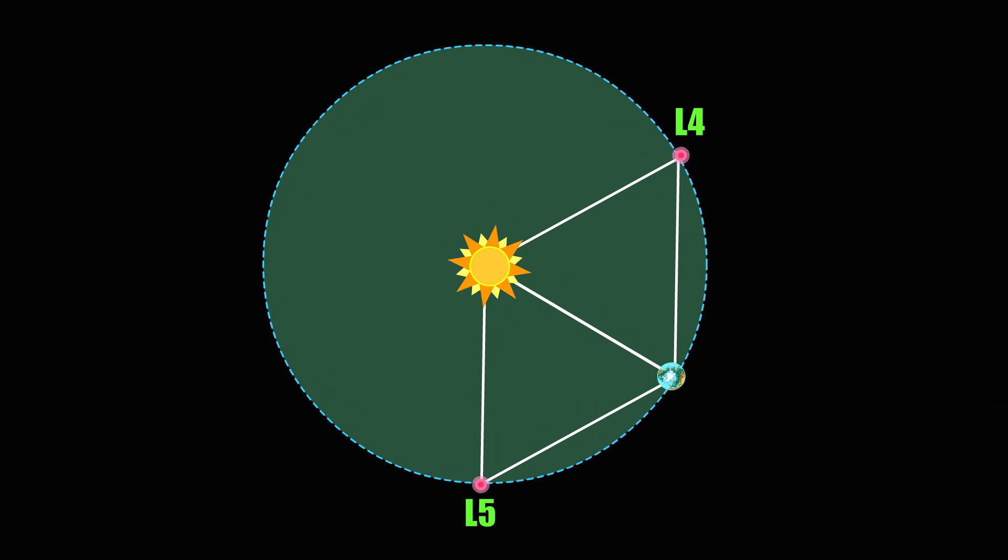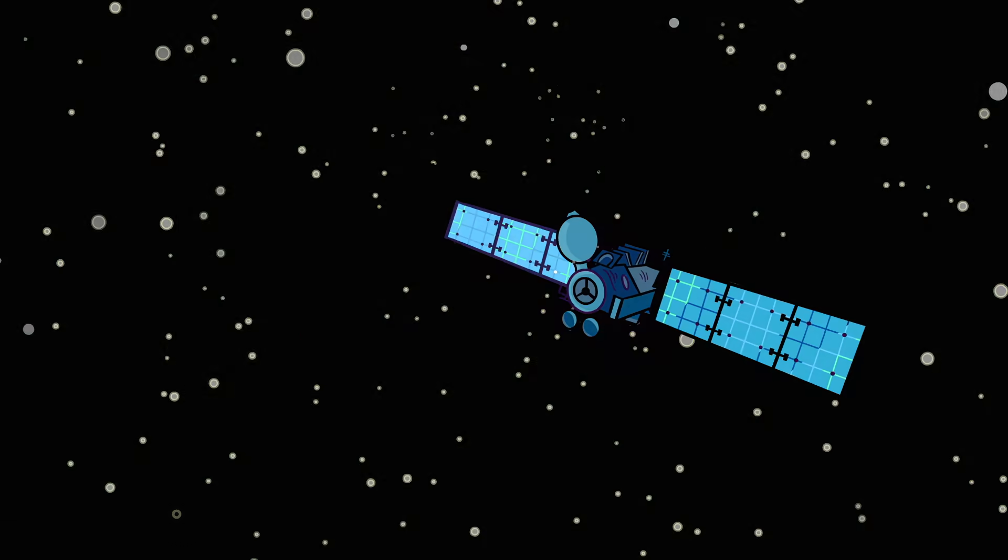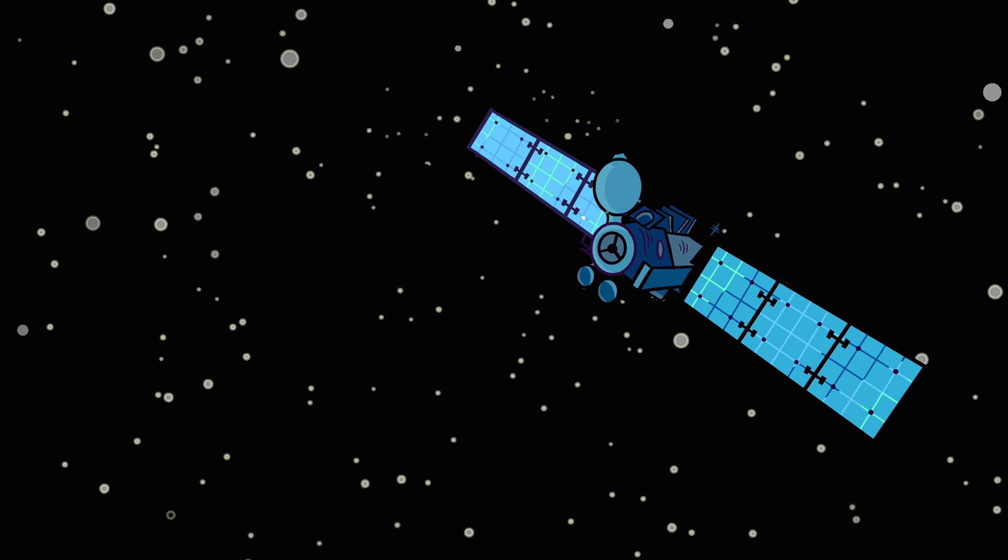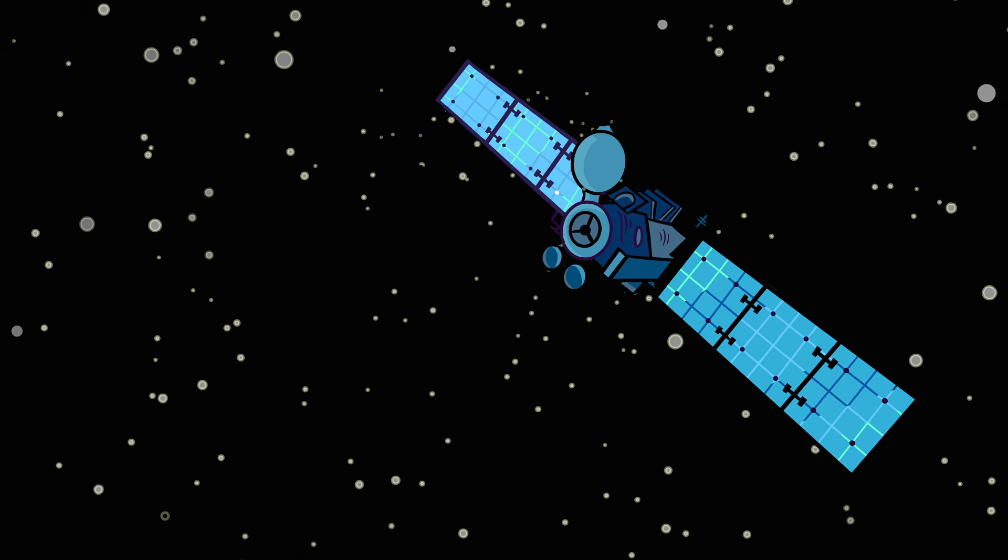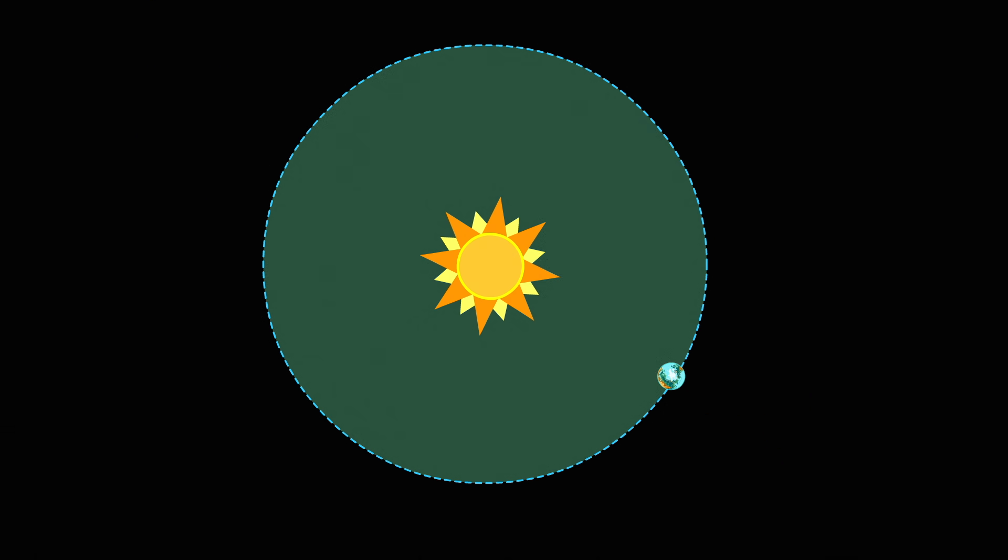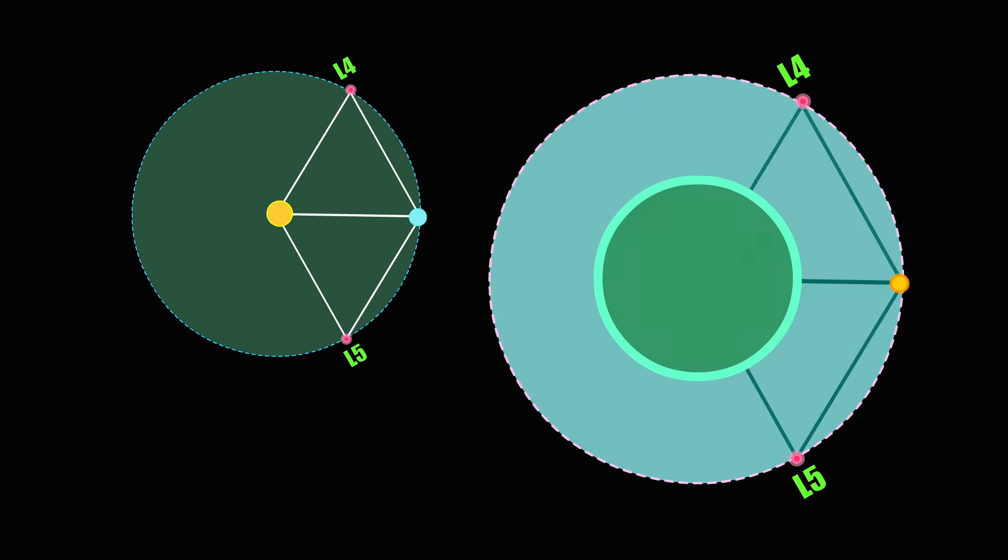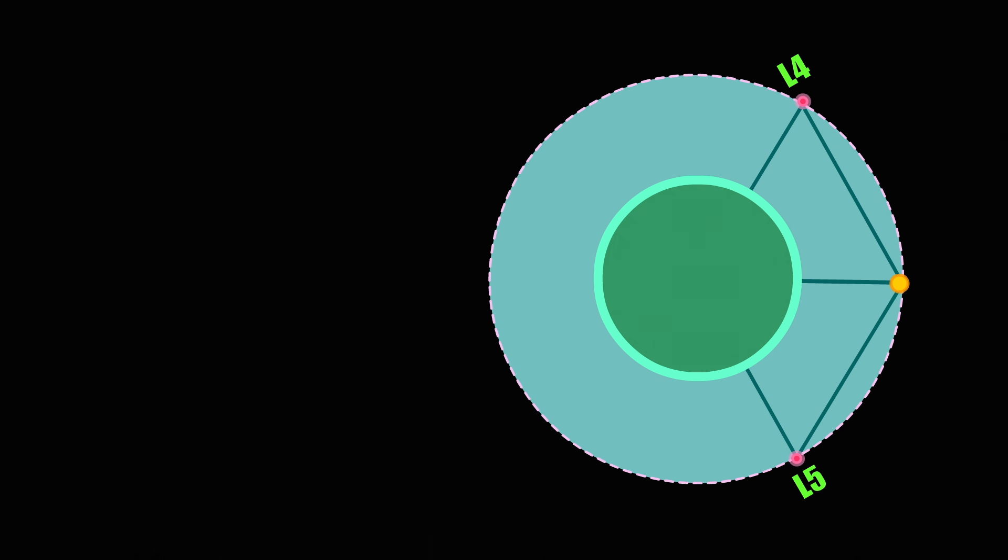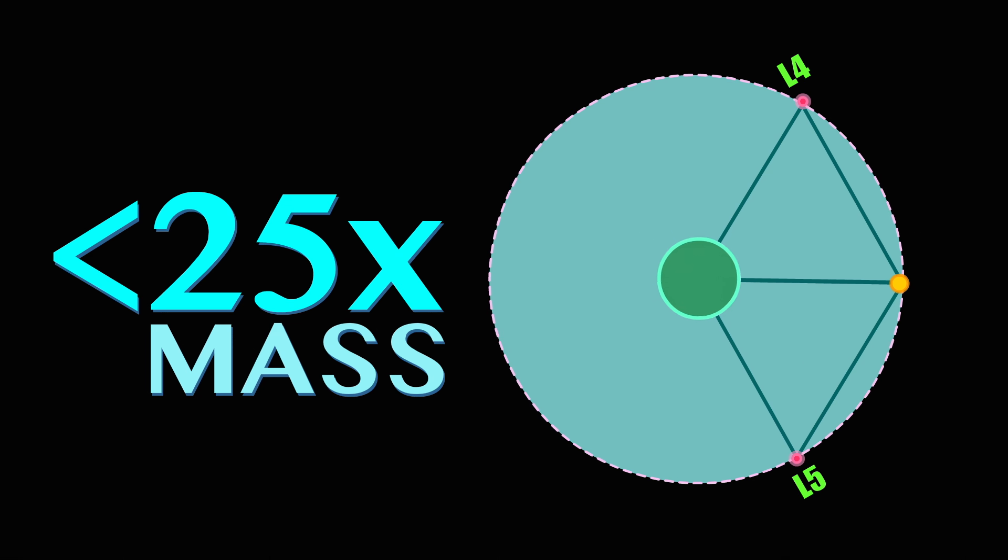In every set of five, the first three Lagrange points are slightly unstable. This means objects will slowly drift away from them, though keeping what we've parked there in place is still energetically cheap. The stability of L4 and L5, however, varies from set to set. If the heavier of the two bodies generating the points has less than 25 times the mass of the lighter body, these points are too unstable to park things in.